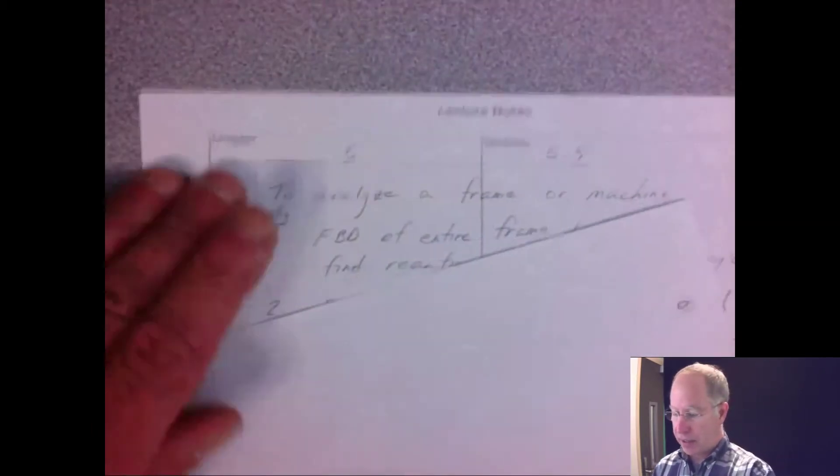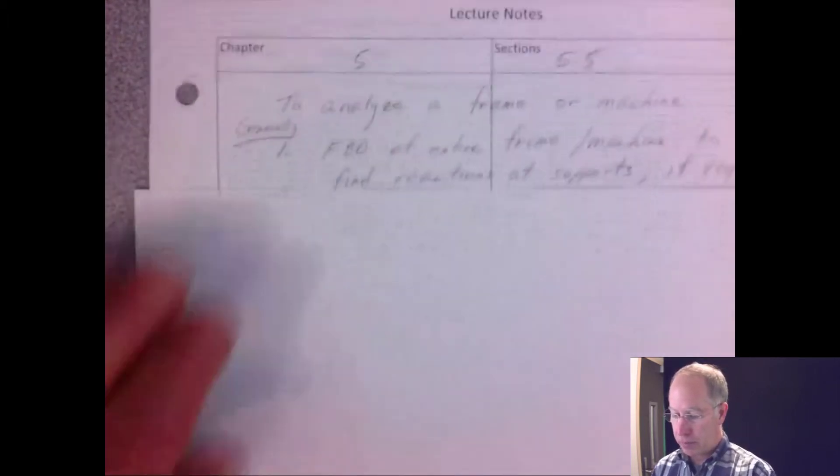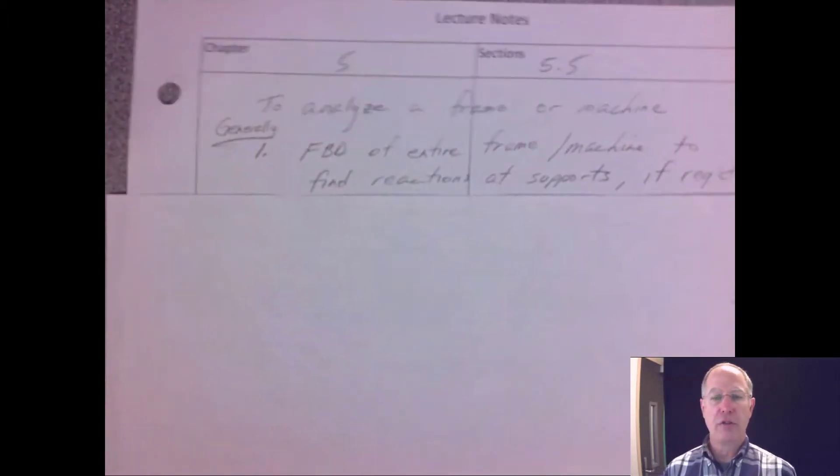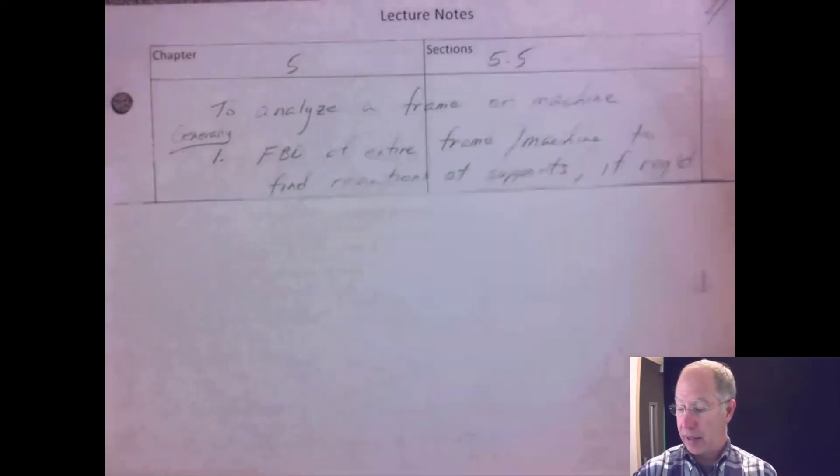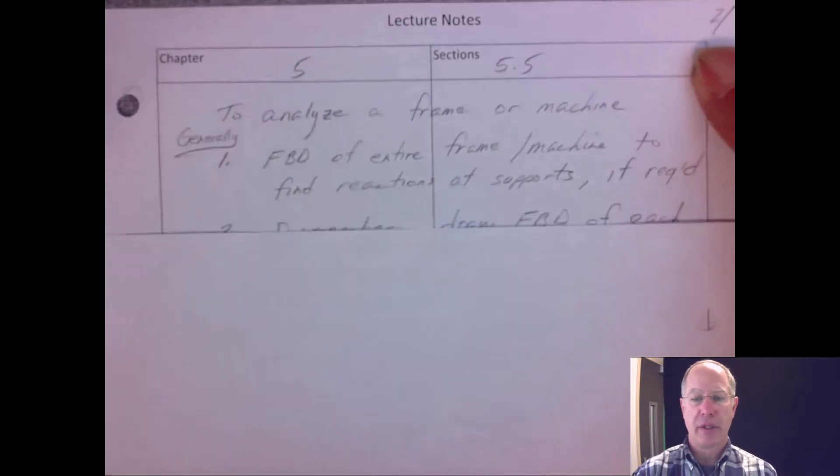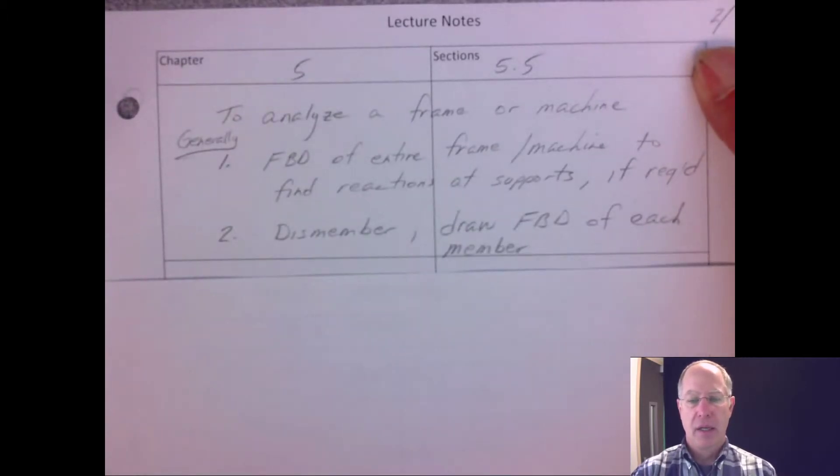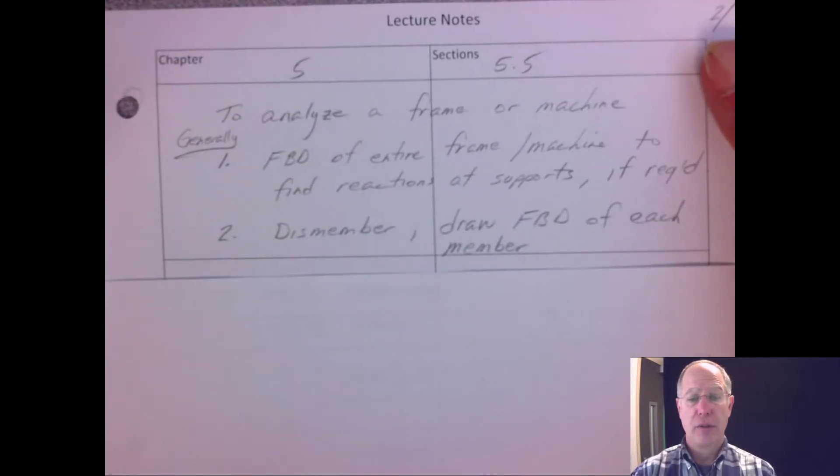So generally speaking, to analyze a frame or machine, what's the first thing you do? You draw a free body diagram. Generally speaking, draw a free body diagram of the entire machine so that you can determine its reactions, forces at the supports. You don't always need to do that, but generally speaking that'll be a first step.